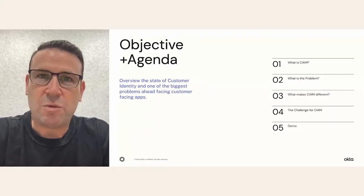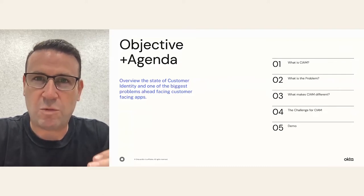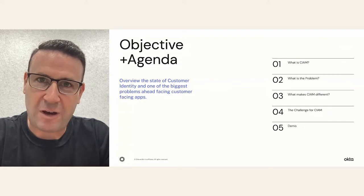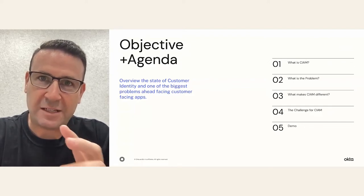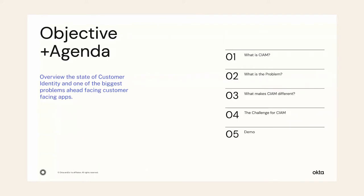To cover this off, we're really going to focus first on describing what customer identity and access management is, what it does, and the business problems it solves. Then we'll focus on how customer identity makes a difference, and lastly on what the challenges are for customer identity and access management. Then I'm going to hand to John, who's going to give you a demonstration on the technology.